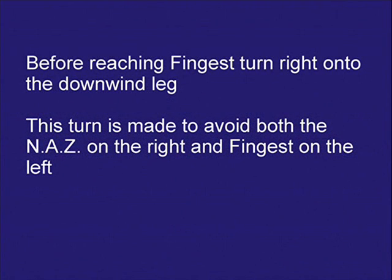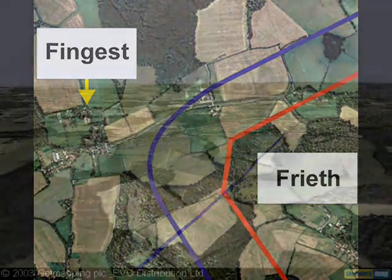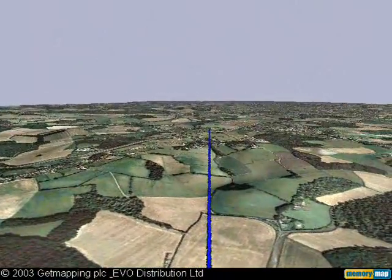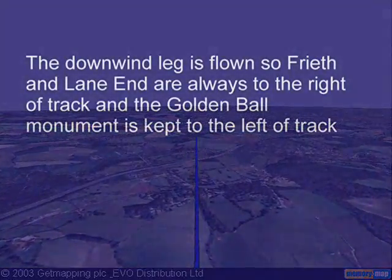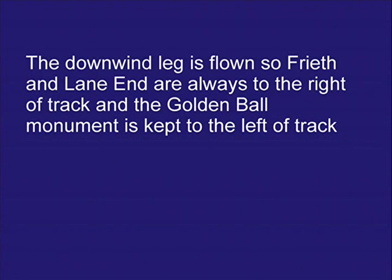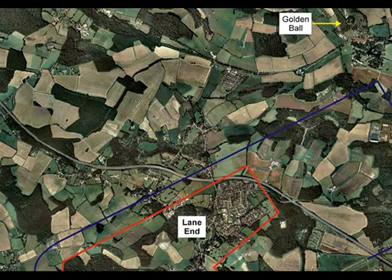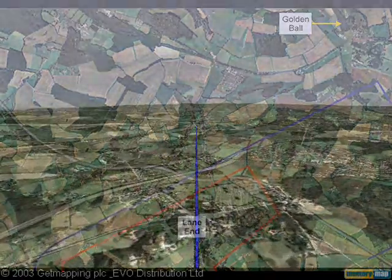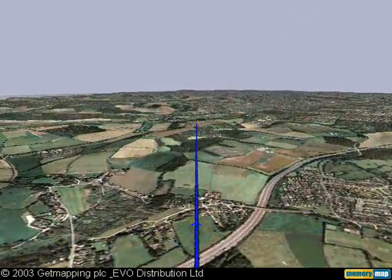Before reaching Fingrist, turn right onto the downwind leg. This turn is made to avoid both the noise abatement zone on the right and Fingrist on the left. The downwind leg is flown so Freeth and Lane End are always to the right of track, and the Golden Bull Monument is kept to the left of track. Lane End should be kept to the right on downwind.